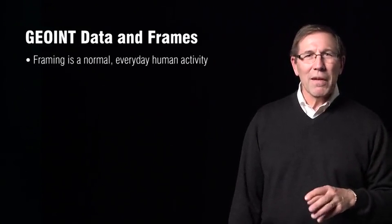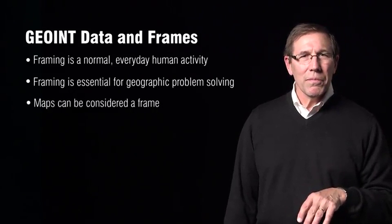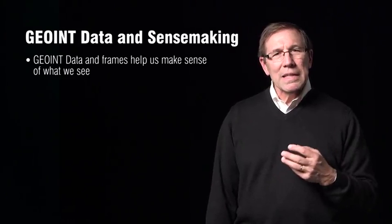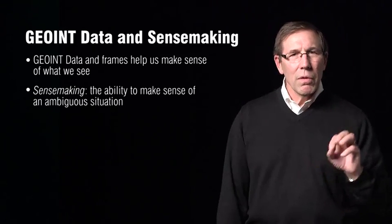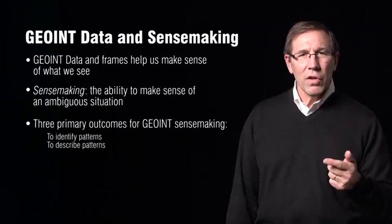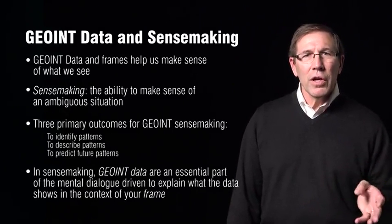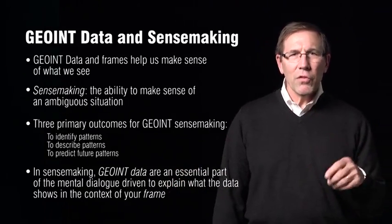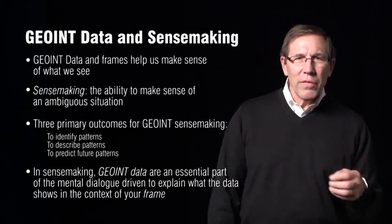Framing is normal — it's an everyday activity essential for geographic problem solving. In fact, maps are a frame. Joining data and frames helps us make sense of what we see. Sense making is the ability to understand ambiguous situations. There are three primary outcomes of this understanding: identify patterns, describe patterns, and predict future patterns. In sense making, joint data are an essential part of a mental dialogue to explain what the data shows in the context of how we frame it. Joint sense making involves continuous cognitive work to understand the relationship between the data, the place, and events in our frame.